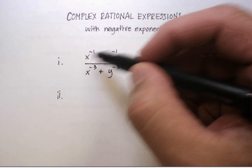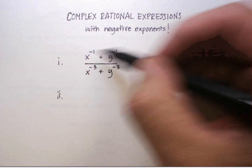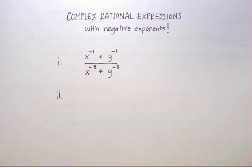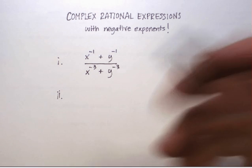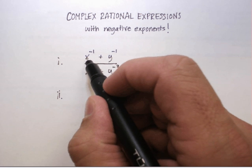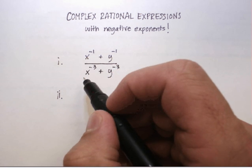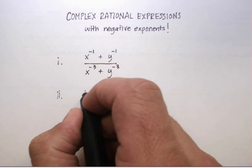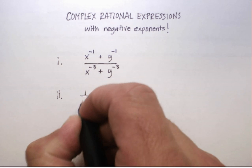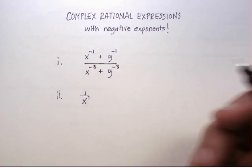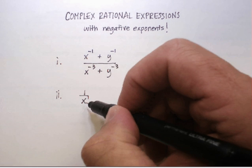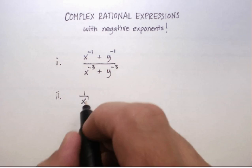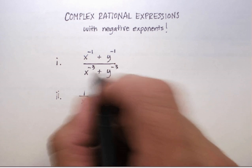Looking at this complex rational expression with negative exponents, if I were to focus just on x to the negative 1 — ask yourself, what does x to the negative 1 mean? Basically, it means to take the variable and put it in the opposite side of whatever denominator it's in. x to the negative 1 is the same thing as 1 over x to the first. So if it's in the numerator, put it in the denominator. If there's a negative exponent down here, you put it in the numerator. That's all it means.